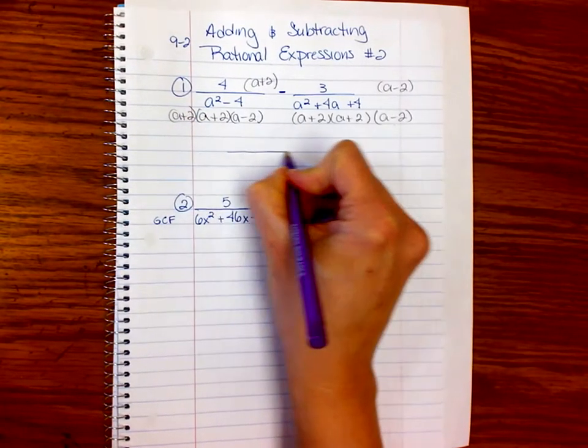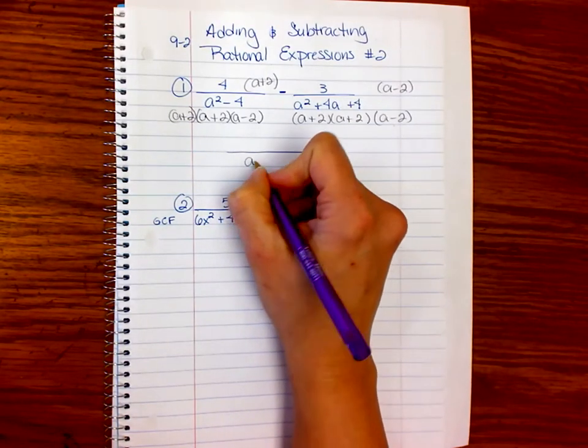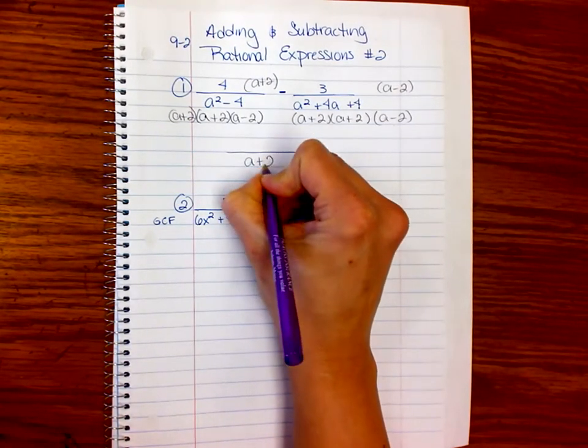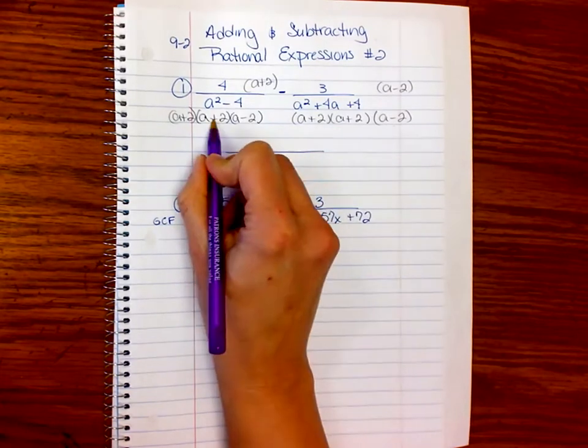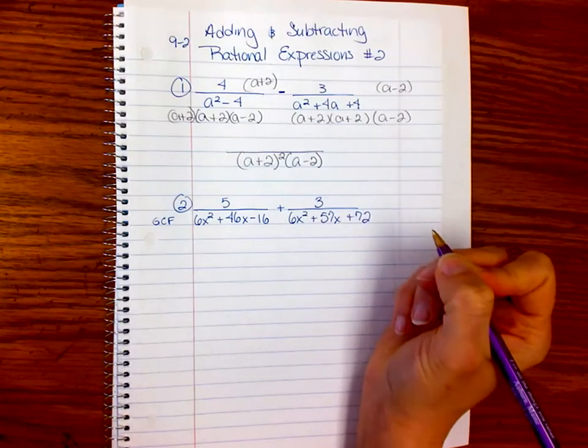Now, when I write that denominator down, I'm going to do it separately. But I'm going to have two of those, so I could write it like that. And then I have that. Okay, so the first one, because this is our common denominator.